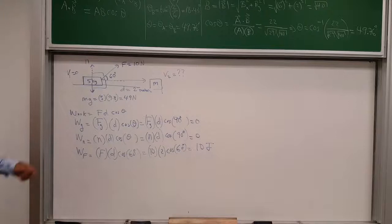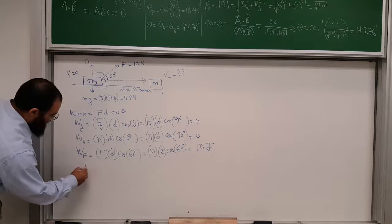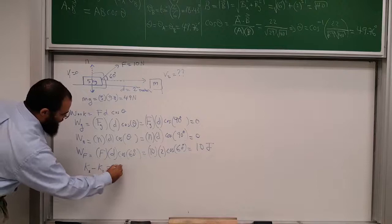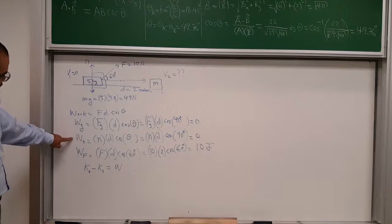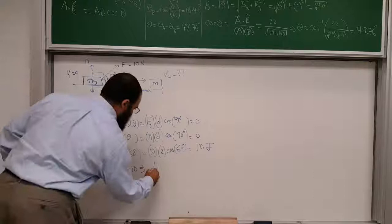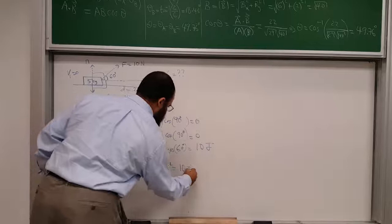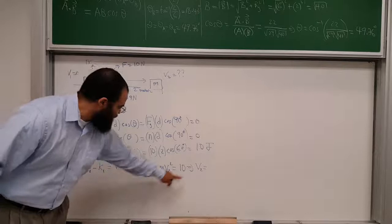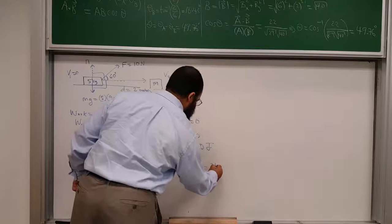Now, what's the speed? The change in kinetic energy equals the total work done. Total work done = 0 + 0 + 10 = 10 joules. The kinetic energy at the beginning is ½mv² but v = 0, so it's 0. So ½mv2² = 10, giving v2² = 2 × 10 / 5 = 4, and the square root of 4 is 2. So V2 = 2 meters per second. I'll stop this video here and go to the next one.